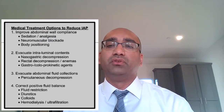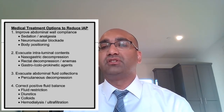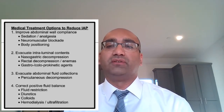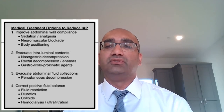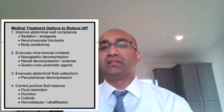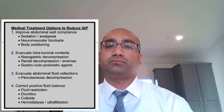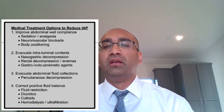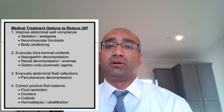Other measures you can perform before taking the patient to the operating room include: if the stomach or colon is distended, you can place a nasogastric tube, decompress the bladder with a Foley catheter, decompress the rectum with a rectal tube, and decompress the stomach. You can also scan the patient, and if they have ascites, hematomas, or abscesses, those can be drained — all of which reduces intra-abdominal pressure.